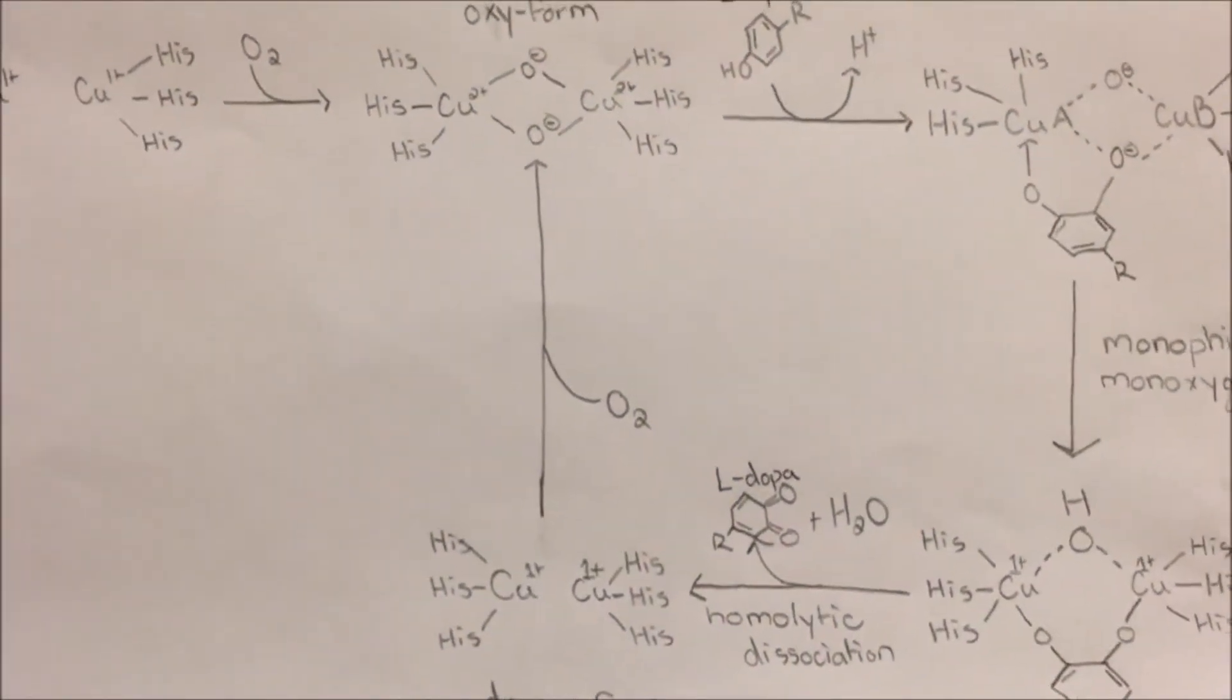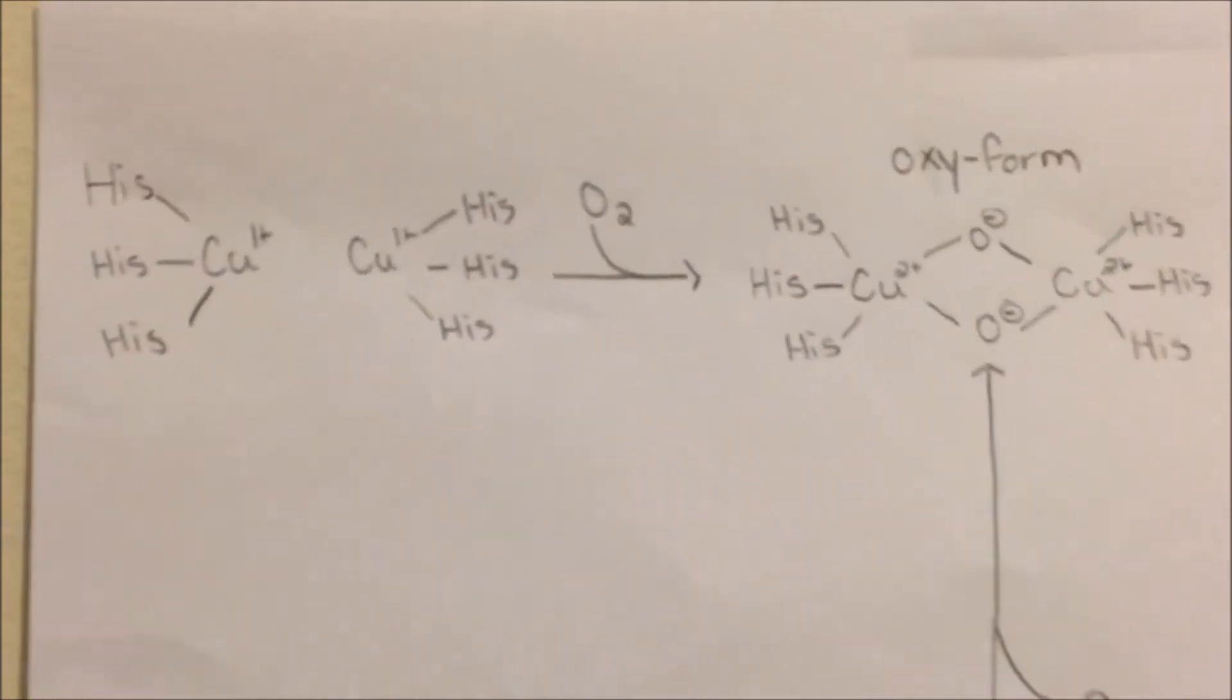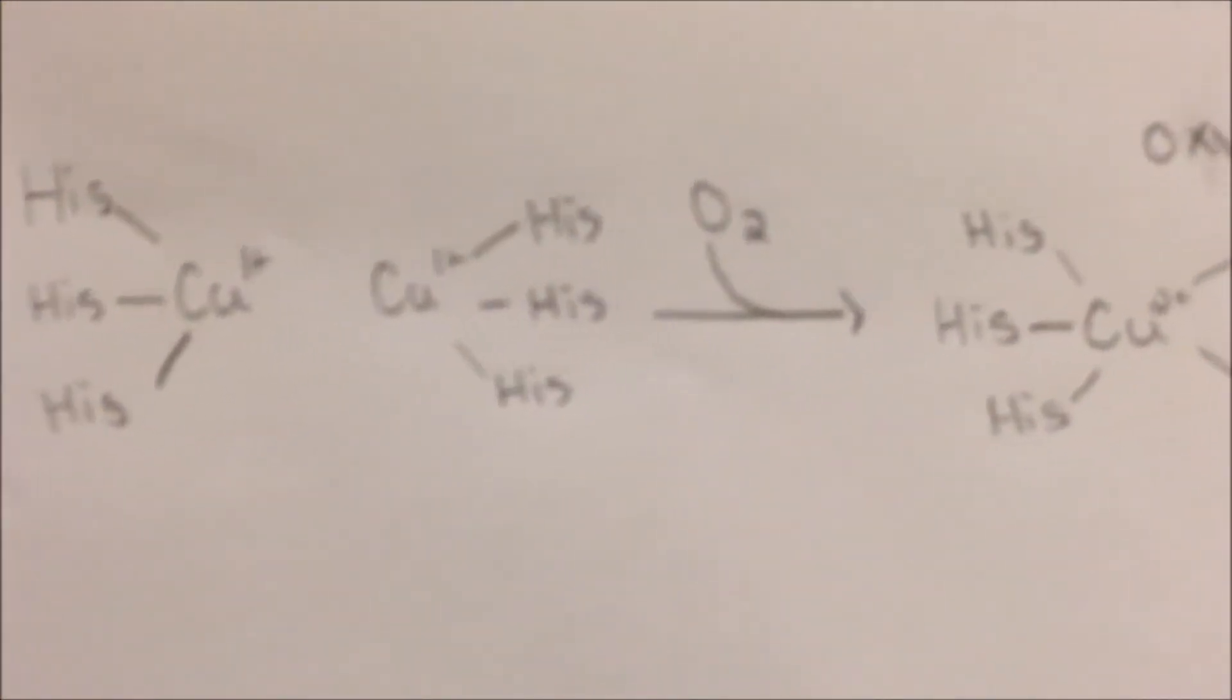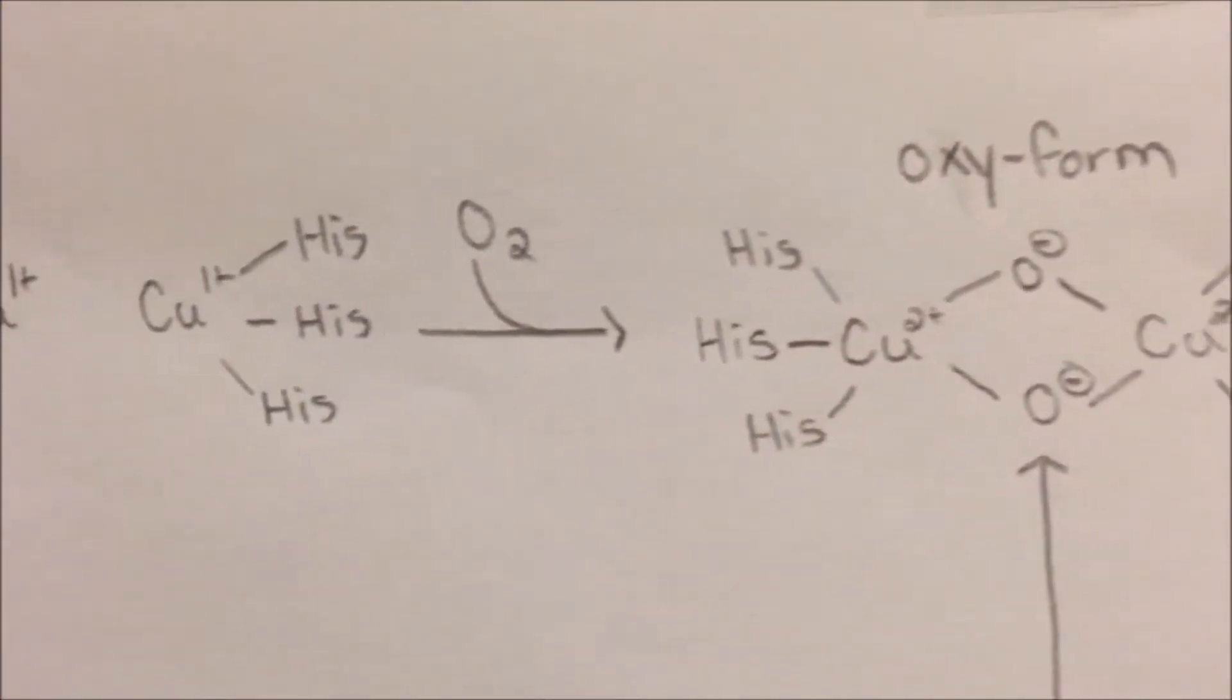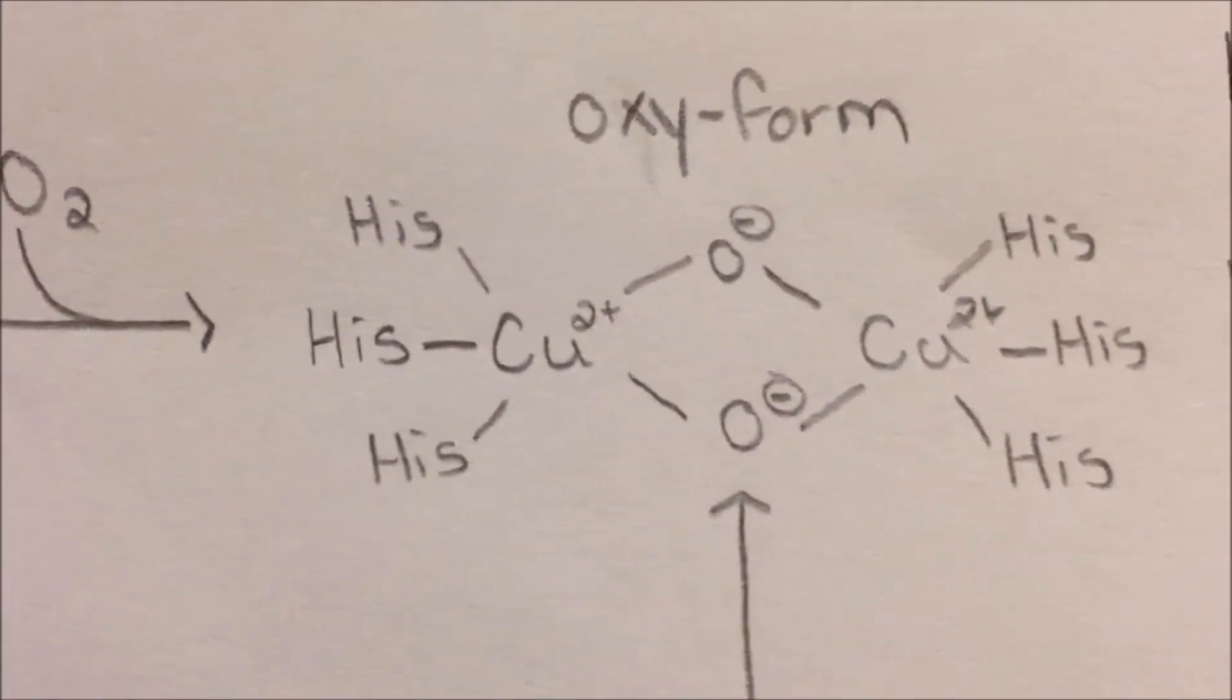To create the active site, an O2 molecule comes in and binds the two copper centers together to form an oxy form of tyrosinase. This forms the active site and allows the monophenylase catalytic reaction to begin.